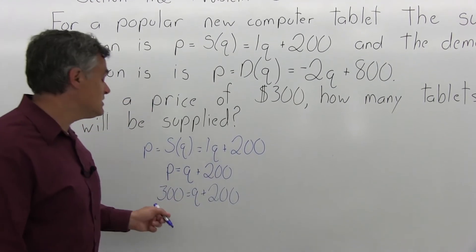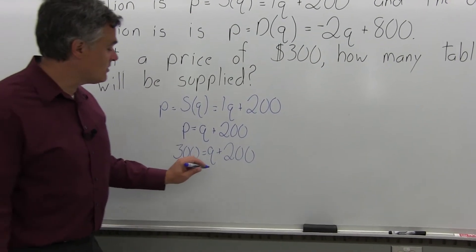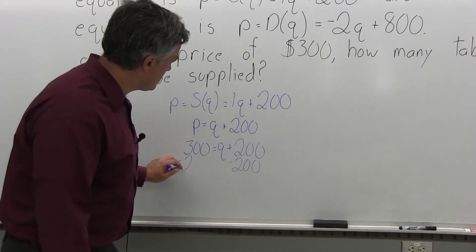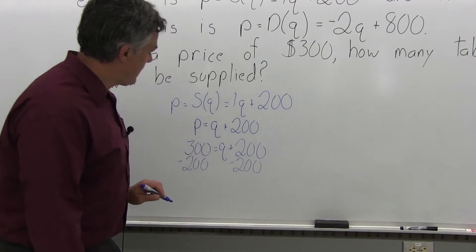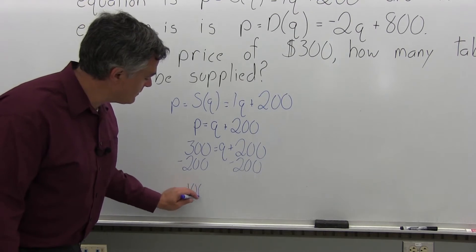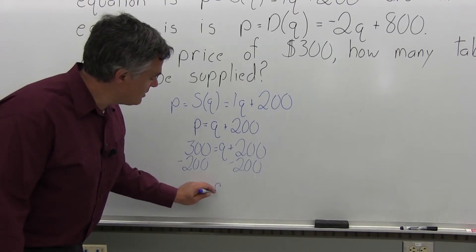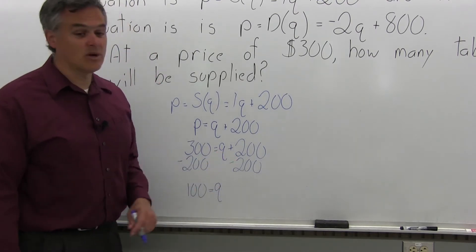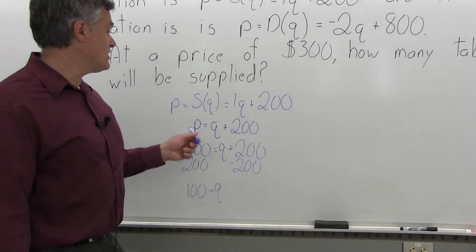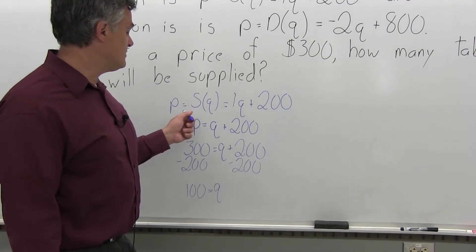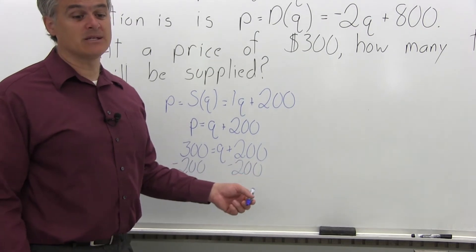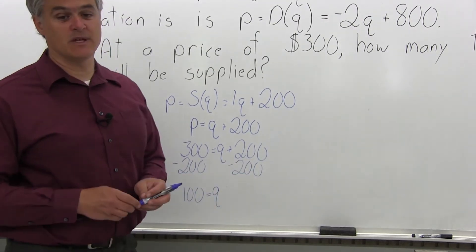Q is the unknown. To get it by itself, subtract 200 from both sides. Positive 300 minus 200 gives 100 on the left, and on the right the positive 200 and negative 200 cancel, leaving just Q. So 100 equals Q. If the price was $300 per tablet, a quantity of 100 tablets will be supplied — the company will be willing to make 100 of them if they sell for $300.